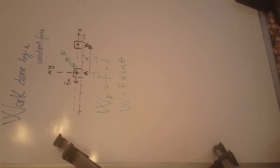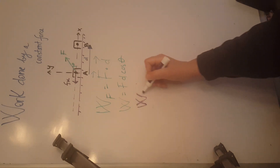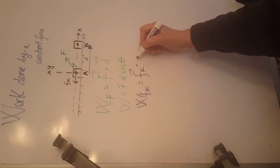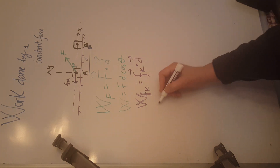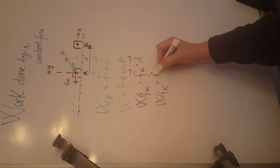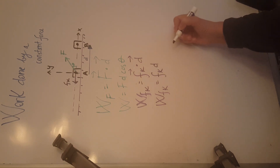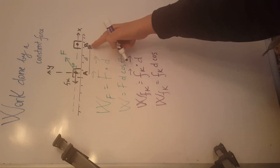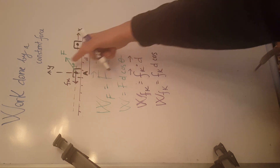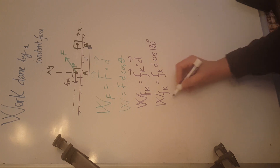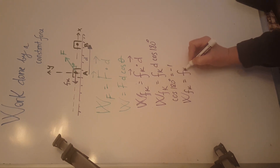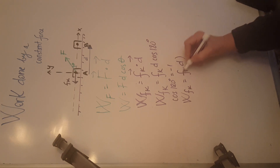For the force of friction, we calculate the work done similarly — as the dot product of the force of friction multiplied by the displacement. This gives us the magnitude of the force of friction times the magnitude of the displacement times the cosine of the angle between them. Since displacement is to the right and the force of friction is to the left, the angle between them is 180 degrees. Cosine of 180 is negative 1.